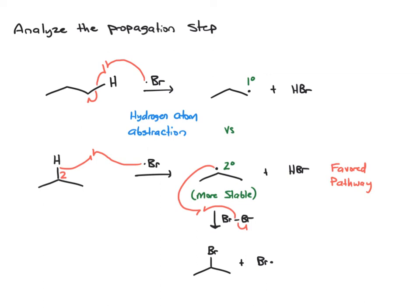Let's put this outcome on an energy diagram. In terms of the starting material and product, there's really not much difference energy-wise. The primary bromide and the secondary bromide don't differ much in energy either. The big difference is in the intermediate. The secondary radical is lower in energy, and the primary radical will be higher in energy. So when you think about the first step of the reaction, the starting material has to climb a hill over the transition state to reach the intermediate. The transition state for the secondary is lower, and for the primary it's an even bigger hill to climb — that's why the secondary is the lower energy pathway.